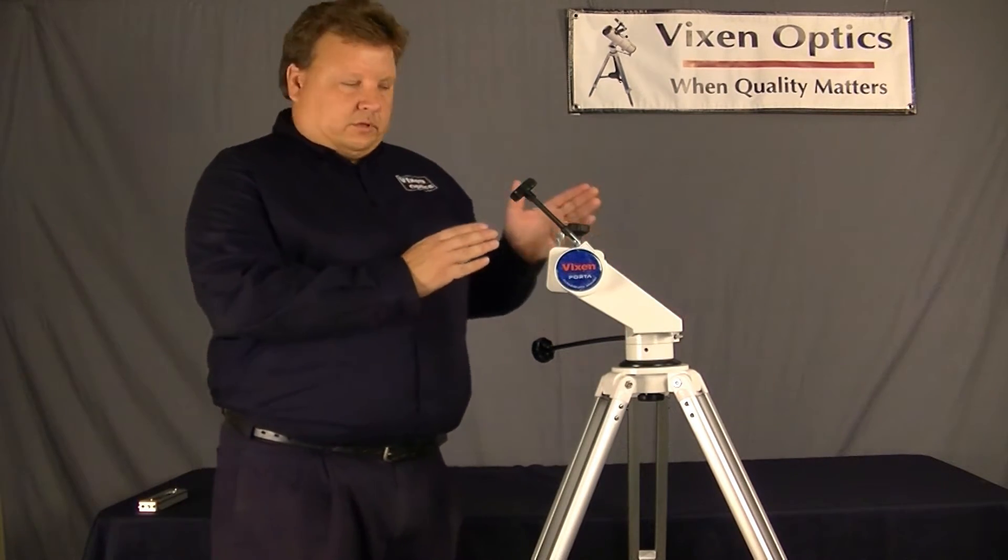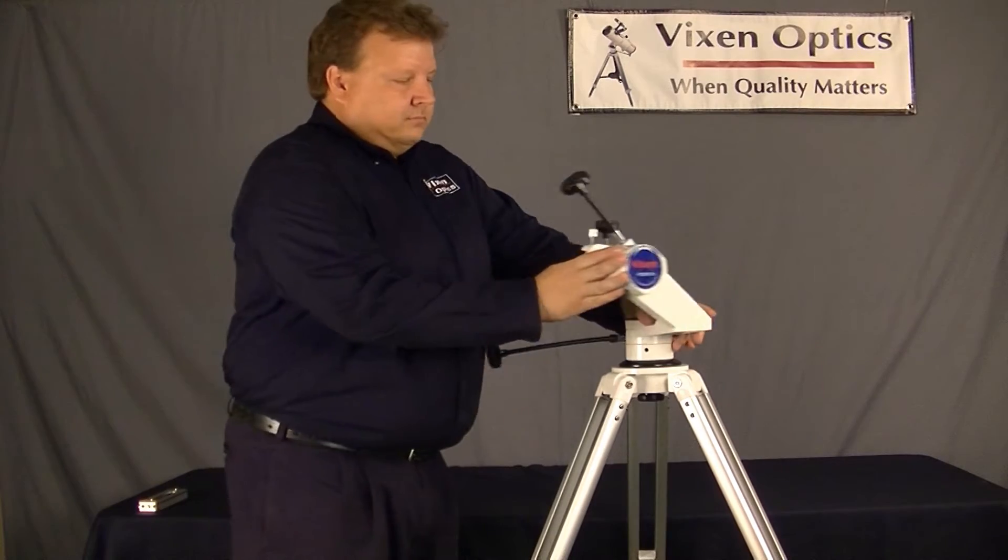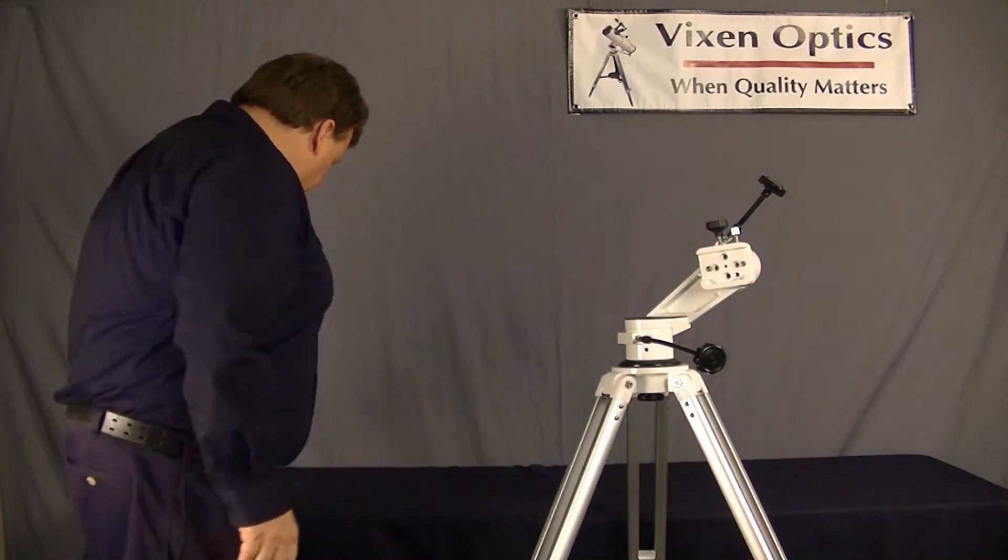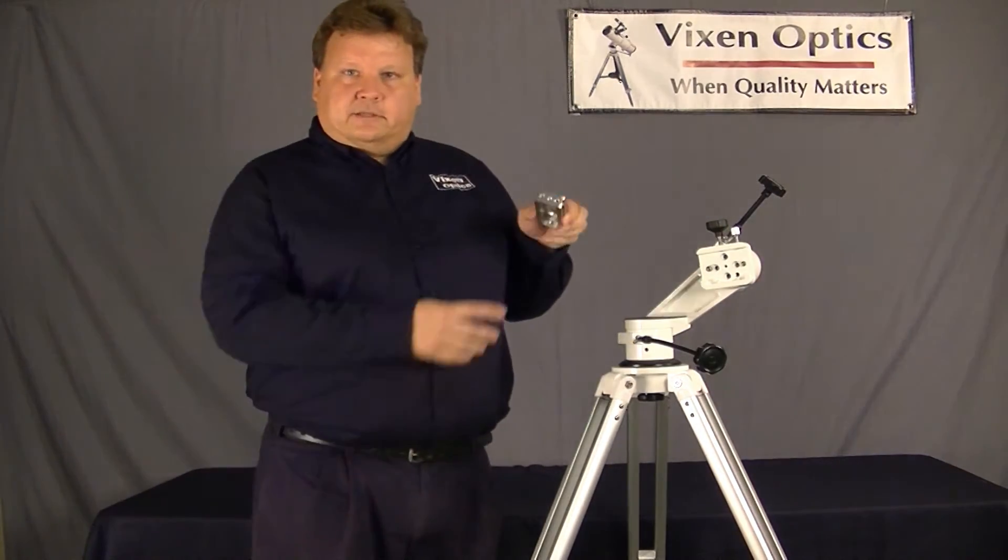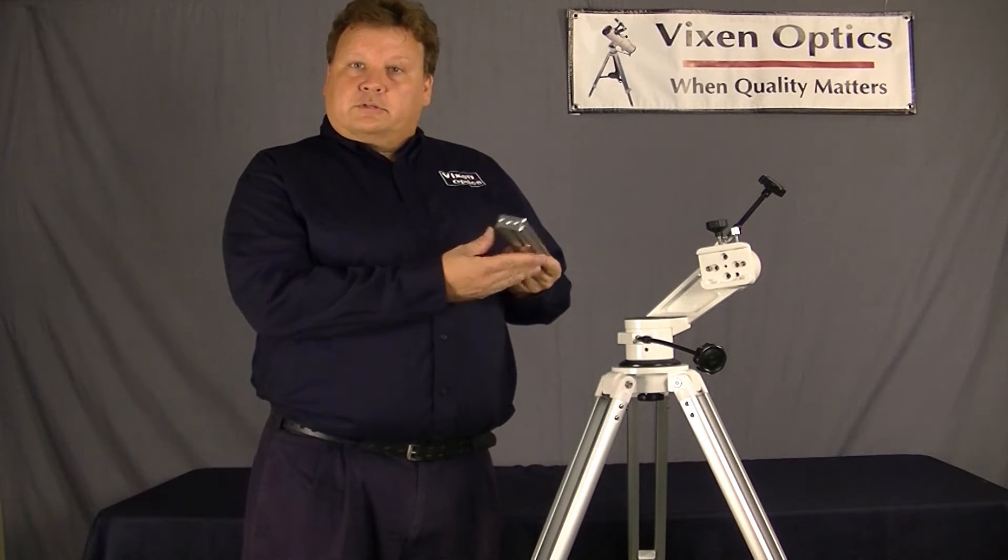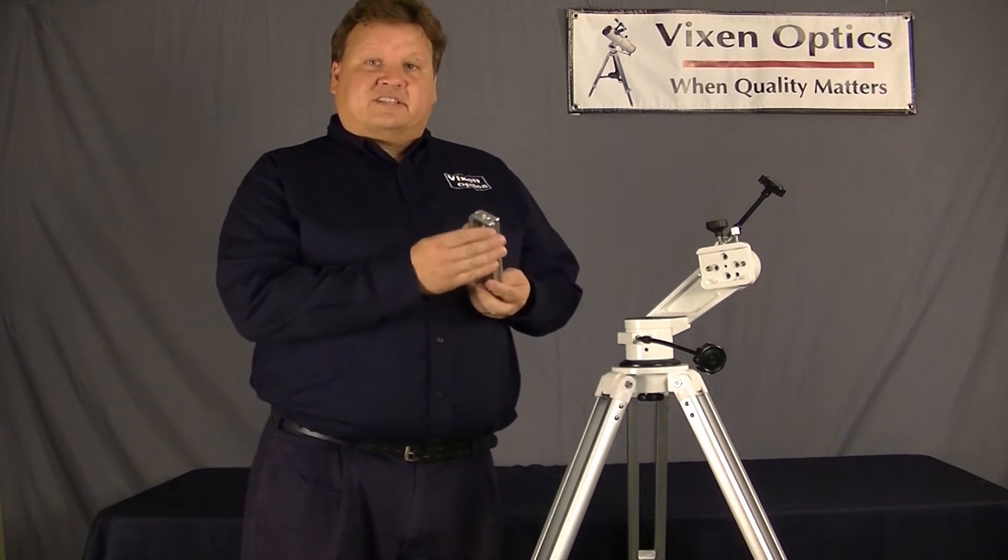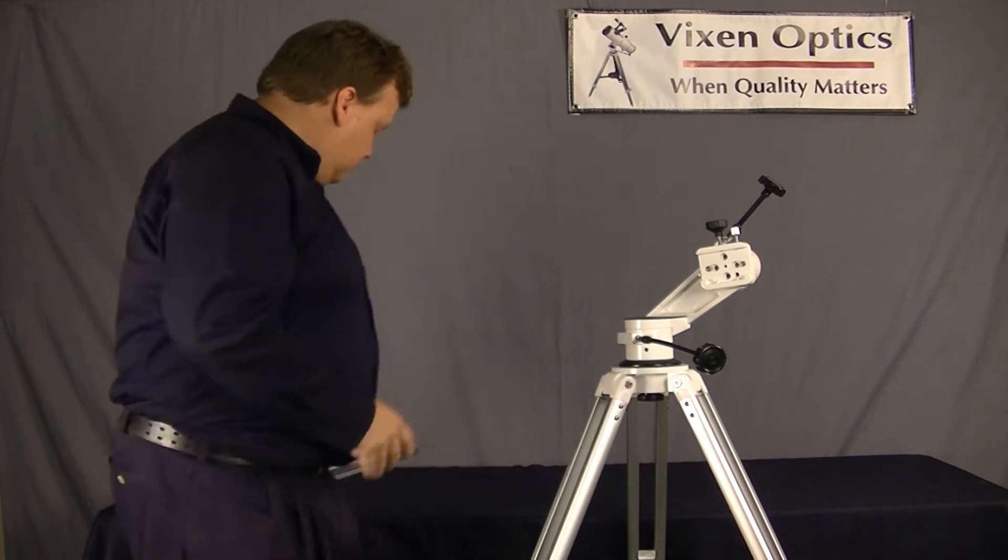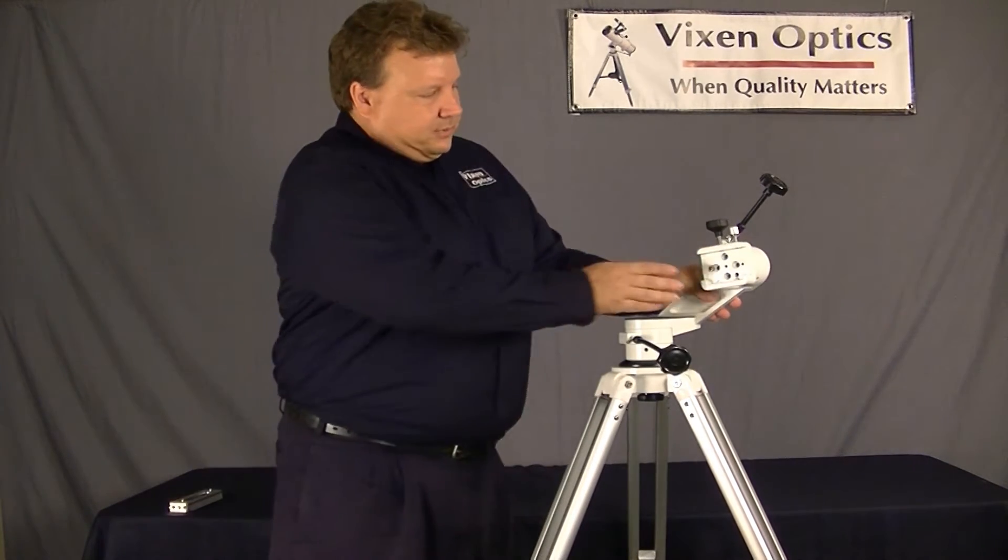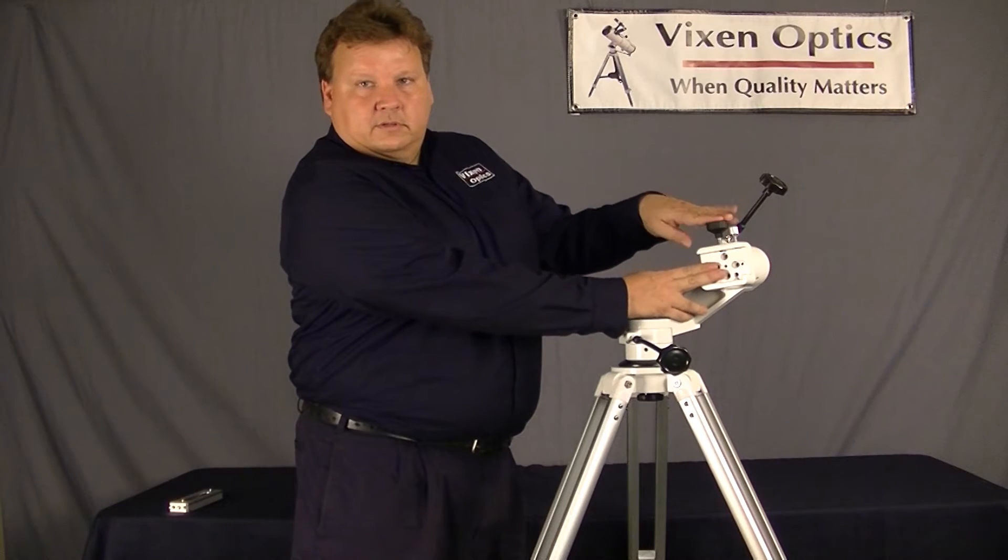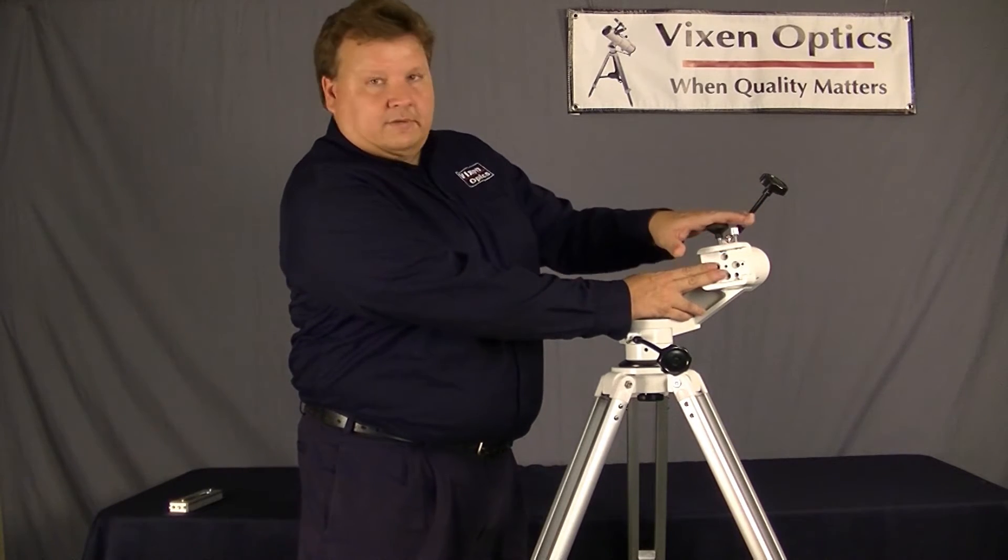First of all, you can attach a scope with a dovetail plate from the side. And by a dovetail plate, I just mean a plate like this. Most telescopes have this plate. This is called a Vixen dovetail. You attach it by sliding it in here and tightening down the main knob and then the safety knob.